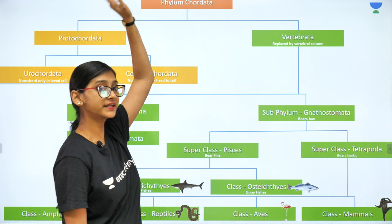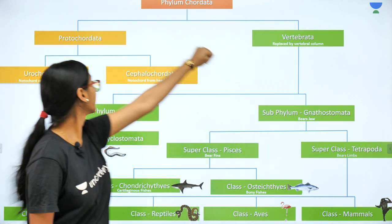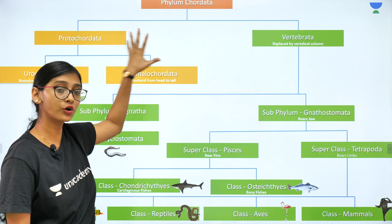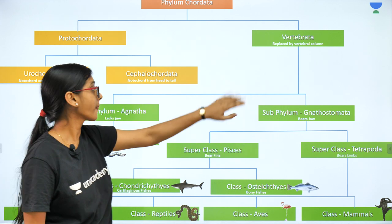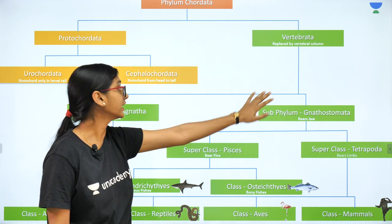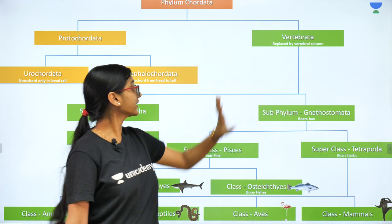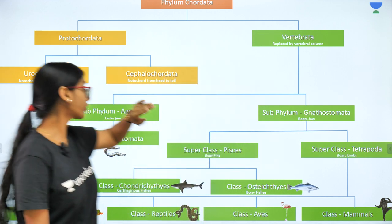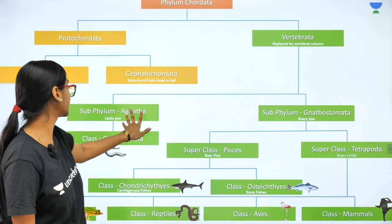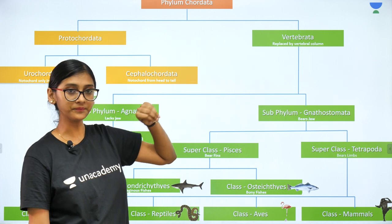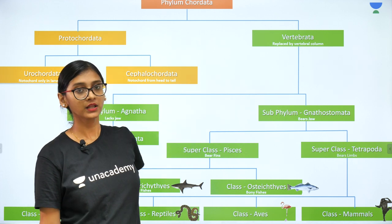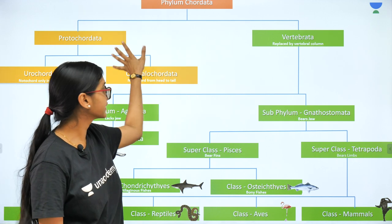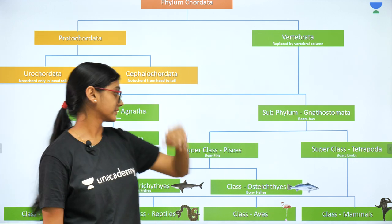Today we'll be talking about Chordata. Chordata can be divided into Vertebrata and Protochordata. Humans come under Vertebrata. Under Vertebrata, there are different sub-phyla — Agnatha and Gnathostoma — and we'll be discussing each category in the coming slides.